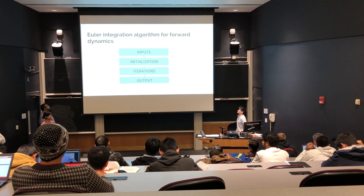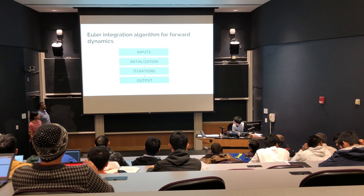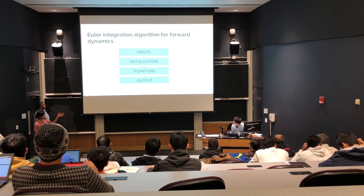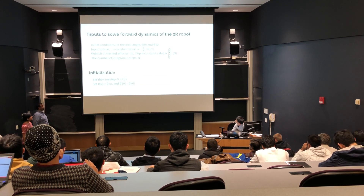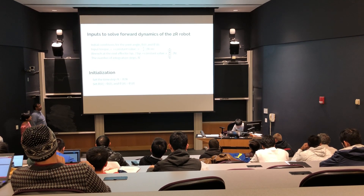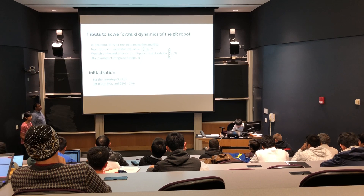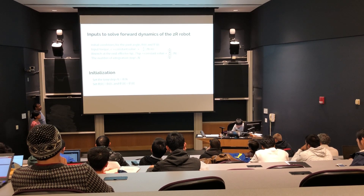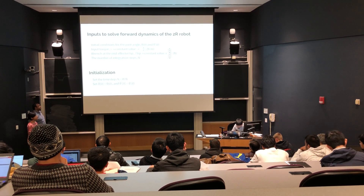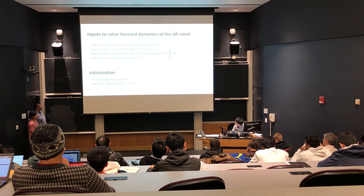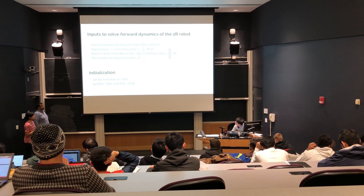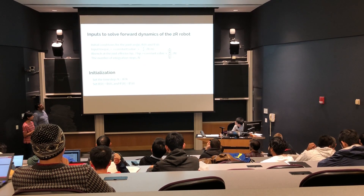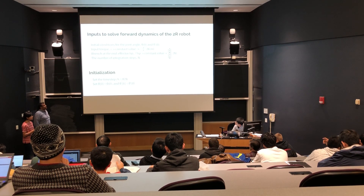Now I'll explain how to use that data in the Euler integration algorithm for forward dynamics. There are four important steps: the input step, the initialization step, the iteration step, and the outputs. For the input stage, you decide your initial theta and theta dot conditions and provide an input torque. Torque and f-tip are taken as constants in this example. You also define the number of integration steps n, and then initialize del_t as tf divided by n, along with initial conditions for theta and theta dot.